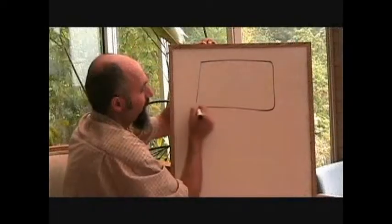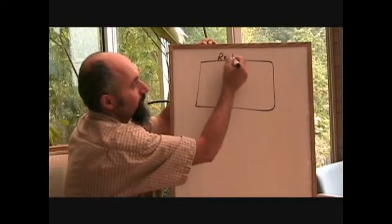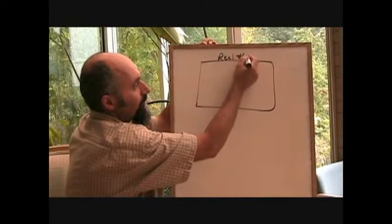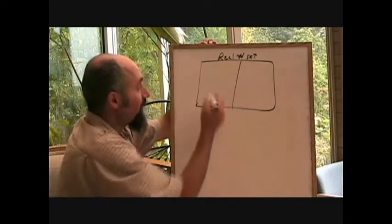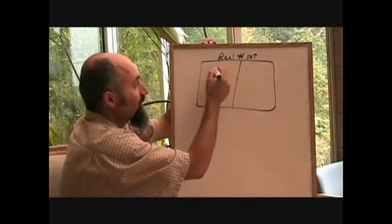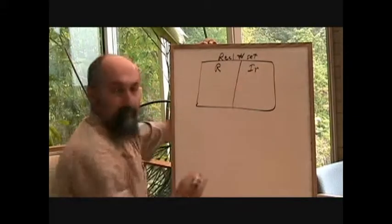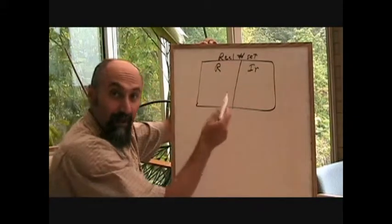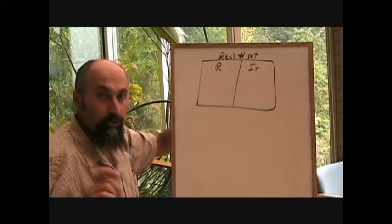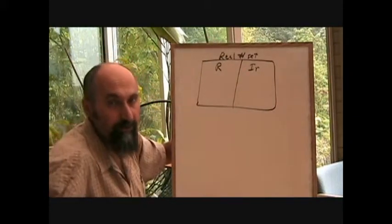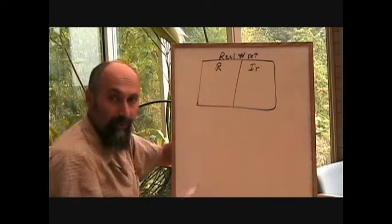If you remember this, this is the real number set, and it's broken up into two sections: the rational numbers and the irrational numbers. As far as you're concerned, the majority of numbers you're going to deal with in high school are going to be from this group.